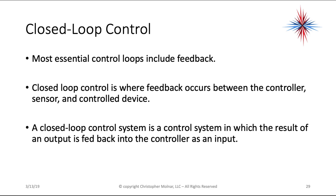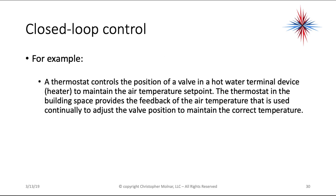Closed loop control is where feedback occurs between the controller, sensor, and control device. It is the control system in which the result of an output is fed back to the controller as an input. An example is a thermostat controlling the position of a valve in a hot water terminal device to maintain air temperature at a set point — the thermostat provides feedback of air temperature that is continually used to adjust valve position and maintain the correct space temperature.